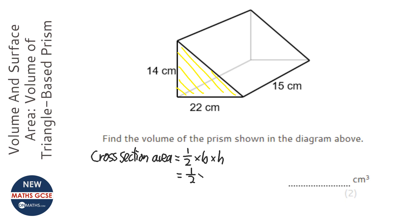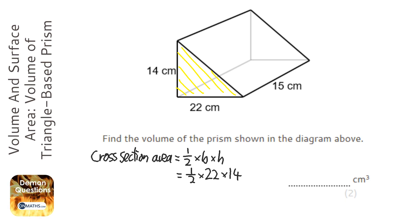The base is 22 and the height is 14. So on my calculator I'm going to do 0.5 times 22 times 14, which is 154. Be careful — the most common mistake here is not to halve it, so with the triangle we have to halve it.